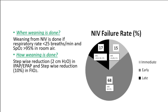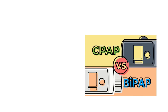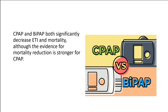Stepwise reduction of 10% in FiO2. When to consider NIV failure: Glasgow Coma Scale less than 13, respiratory rate greater than 40 breaths per minute, or PaCO2 increase of 5 mmHg. CPAP and BiPAP both significantly decrease ETI mortality, although the evidence for mortality reduction is stronger for CPAP.